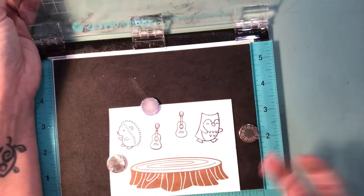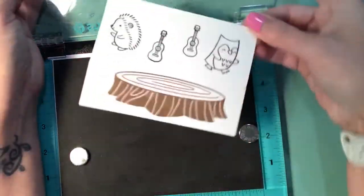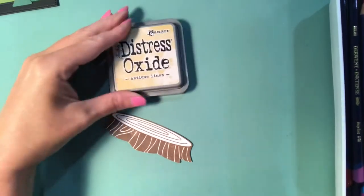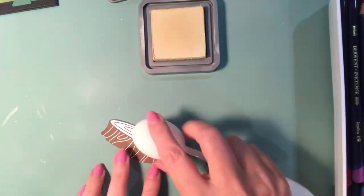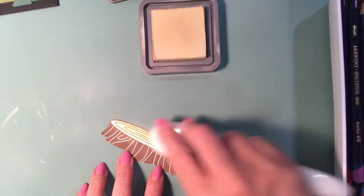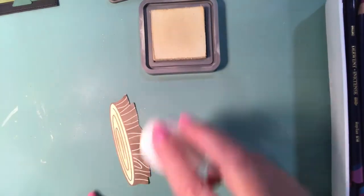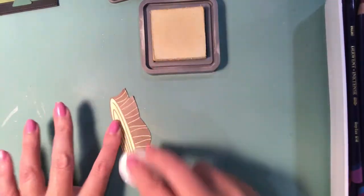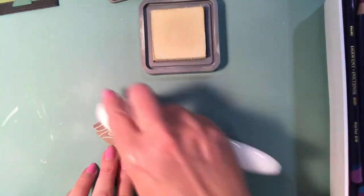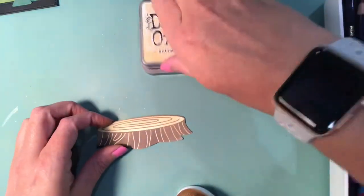Once the ink was all dry, I decided that I was going to fussy cut out the stump. We're using Antique Linen on the top of the stump because that wouldn't be white and I stamped it onto white cardstock. I'm just using it to give it a little bit of texture and it gives it a little bit more depth and dimension with the coloring.